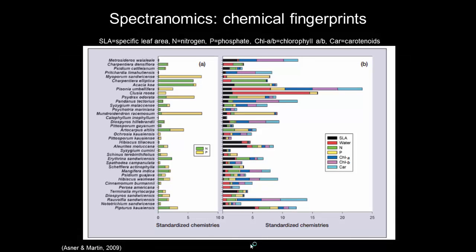There are now new scientific approaches that integrate the spectral remote sensing approaches I have just mentioned with phylogenetics and chemical composition. This is what collectively is called spectronomics. This slide shows an example of the organization of tropical plants based on these principles. Note that there are different leaf constituents in this plot, and the differences in each leaf constituent contribute to the uniqueness of each species' chemical fingerprints.